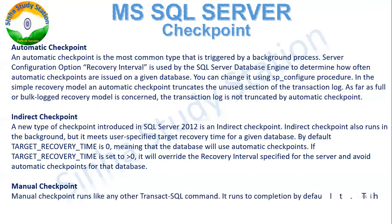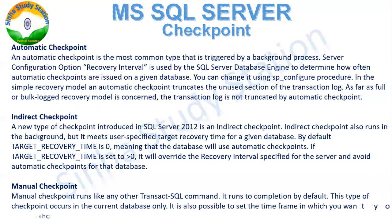The third type is the Manual Checkpoint. Manual checkpoints run like other transaction commands and are run completely by default. This type of checkpoint occurs only in the database in which we are currently working. It is also possible to set a time frame in which you want the checkpoint to complete — we can set the minimum time within the frame for checkpointing and data recovery.